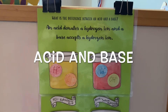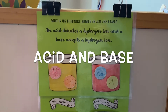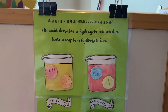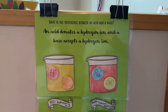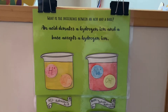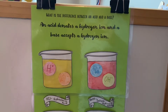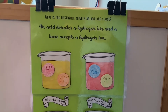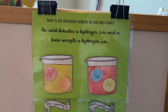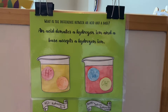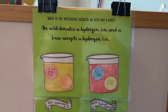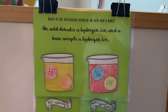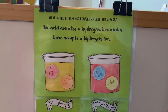Cycle 3, week 19 science — the tune of the song is set to 'Here We Go Loop-de-Loo.' What is the difference between an acid and a base? An acid donates a hydrogen ion, and a base accepts a hydrogen ion.